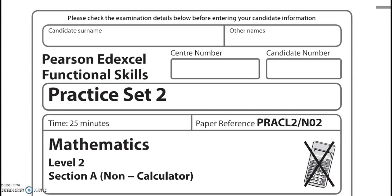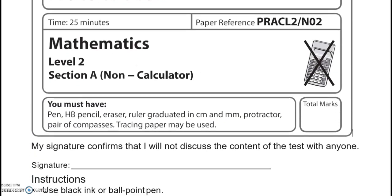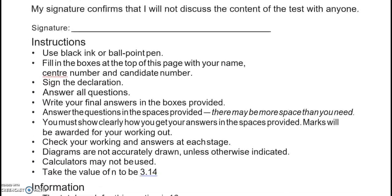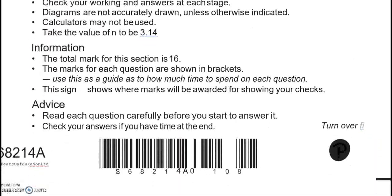This is a Level 2 Functional Skills Maths paper from Edexcel. It's split into two parts. In part 1 you can't use a calculator, but in part 2 you can. There is a total of 16 marks for this section, for this part.